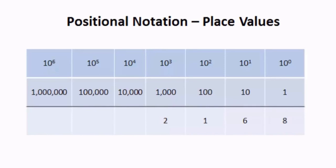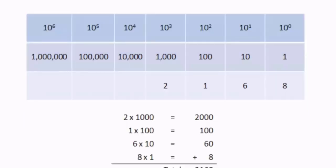If we look at the number 2,168 in long form, we can see that effectively we have 2 one-thousands, 1 one-hundred, 6 tens, and 8 ones. And 2,000 plus 100 plus 60 plus 8 totals 2,168. This is the type of counting and addition that we learn as children.